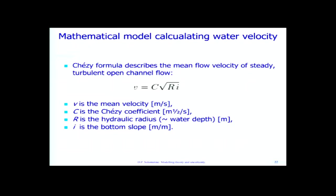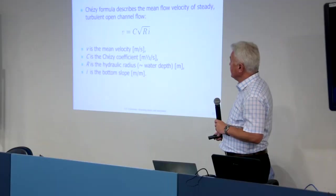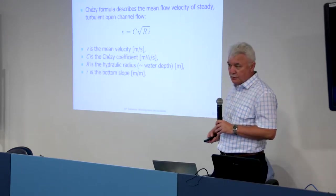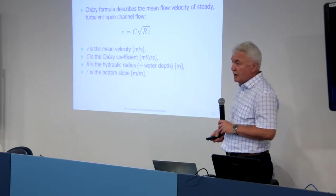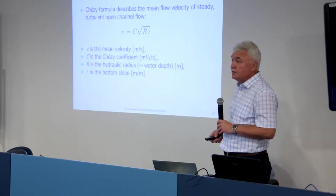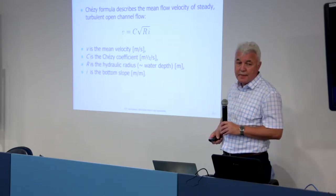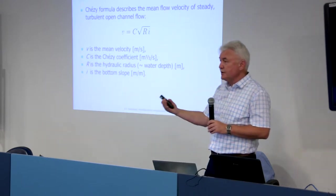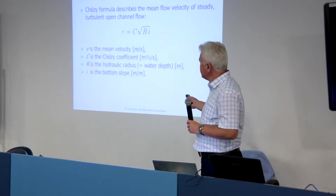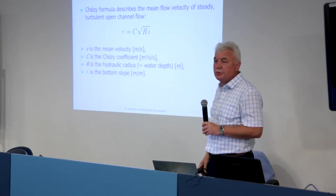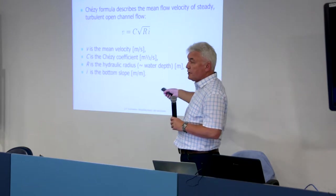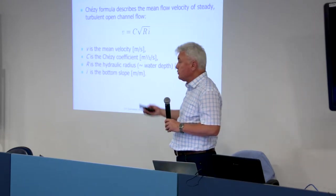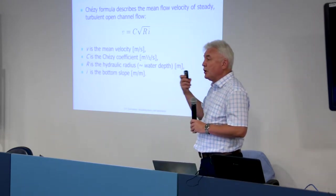This is also a mathematical model, Chazee formula, that describes mean flow of a steady, turbulent, open-channel flow. It's empirical formula, written down 150 years ago. So if you know some parameters of this flow, you can deduce what would be the mean velocity of the flow.